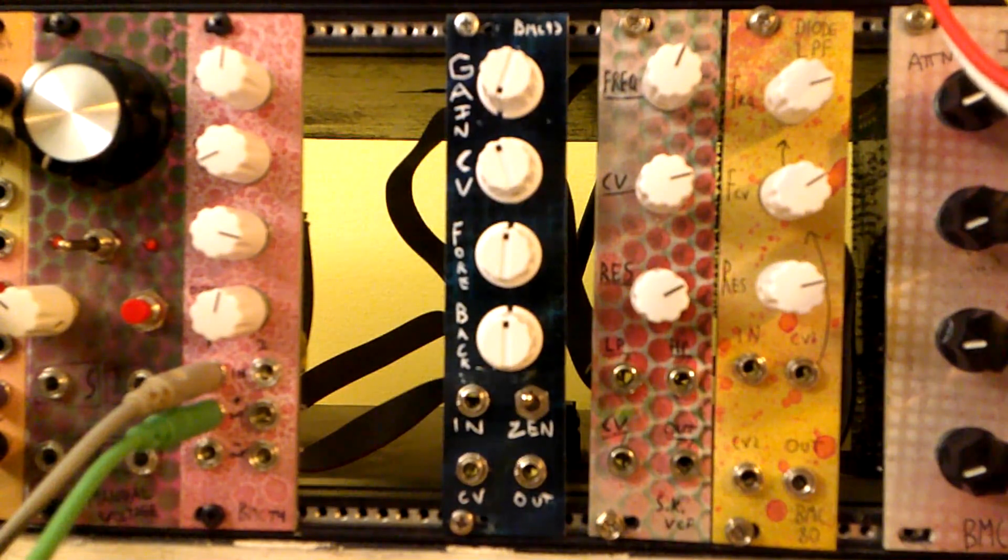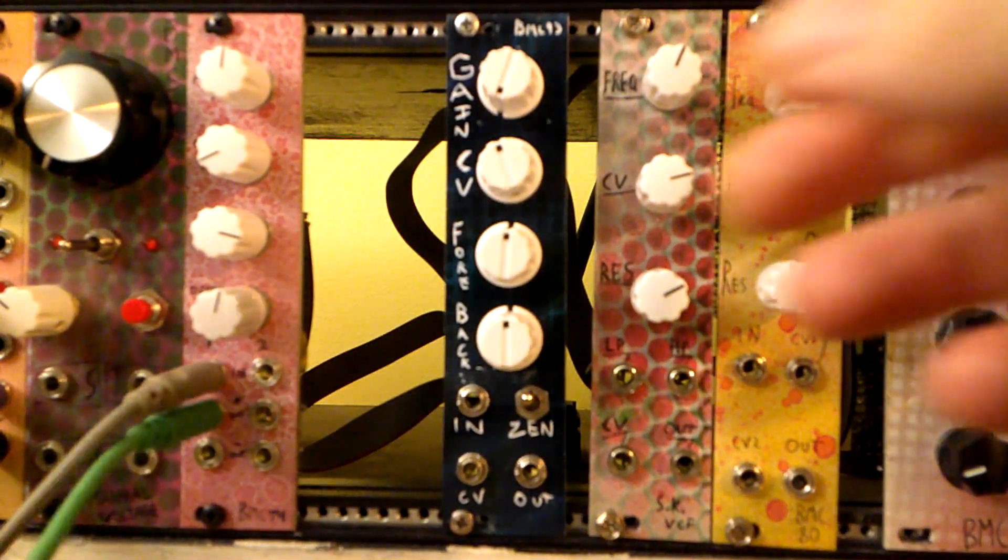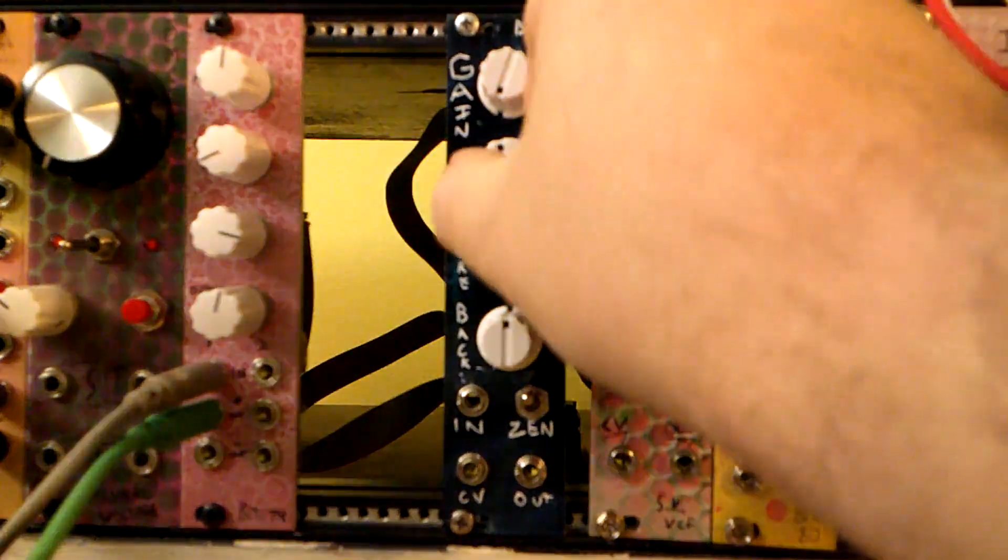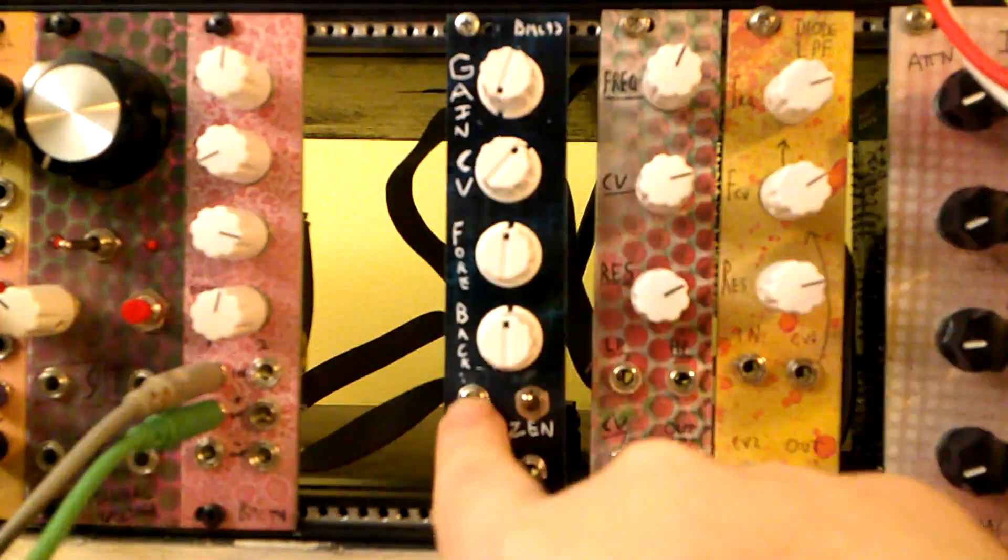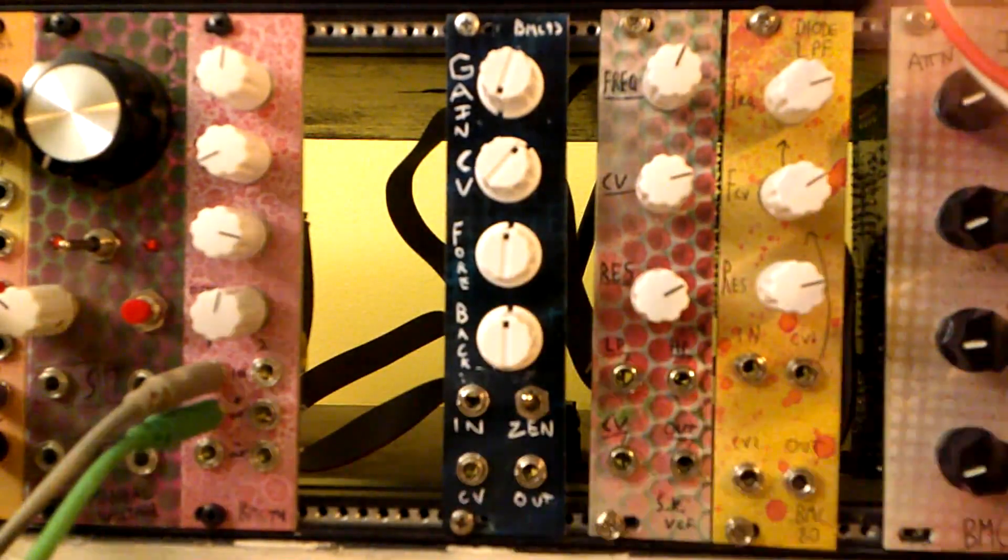Anyways, this can work as just a regular VCA. You would set your gain low and your CV high and input the signal here and a CV there, and it would work great.